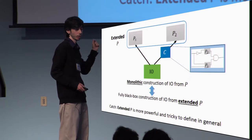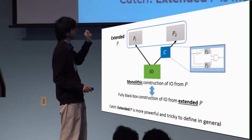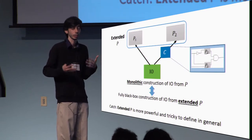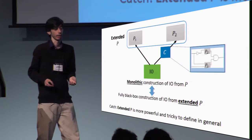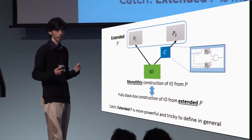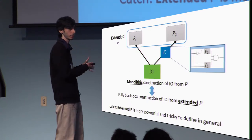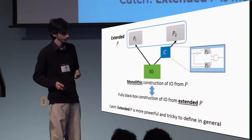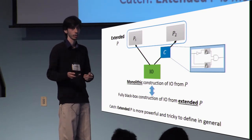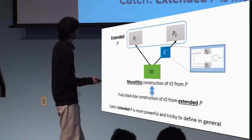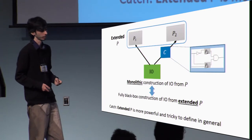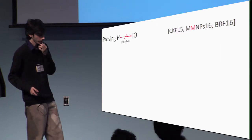This is different from proving an impossibility of a fully blackbox construction of I.O. from a normal P. The extended P is actually a stronger primitive, and we have to carefully define what it means to have this kind of extension. It suffices to prove that a fully blackbox construction of I.O. from extended P is impossible in order to show that monolithic constructions of I.O. from P are impossible.